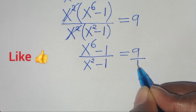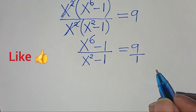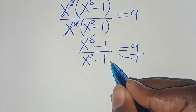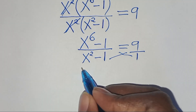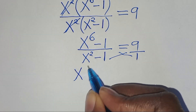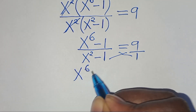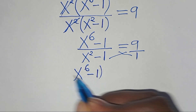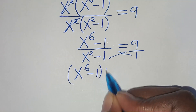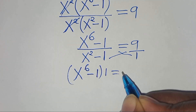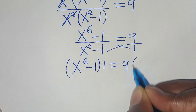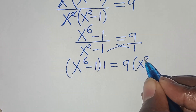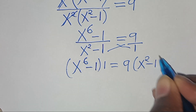9 is our number, so this is over 1. The next step is to cross multiply, so that we have x to the power of 6 minus 1, then multiplying by 1, this is equal to 9 multiplied by x to the power of 2 minus 1.